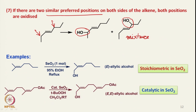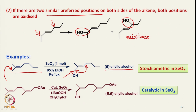From an application point of view, if one takes a substrate of this type and performs the selenium dioxide-based reaction in 95% ethanol under reflux, the preferred position according to rule number one is followed and introduction of the hydroxy group occurs at the di-substituted side of the double bond. As mentioned earlier, it is trans to the other side of the double bond and one gets the E-allylic alcohol. However, in this reaction a stoichiometric amount of selenium dioxide is used, which is not ideal because selenium compounds are toxic in nature.